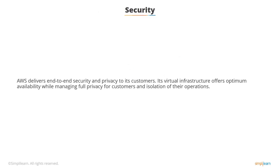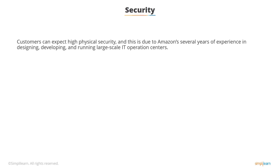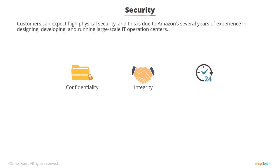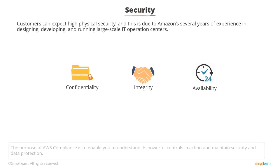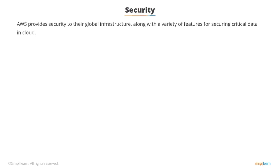AWS delivers end-to-end security and privacy to its customers. Its virtual infrastructure offers optimum availability while managing full privacy for customers and isolation of their operations. Customers can expect high physical security, due to Amazon's several years of experience in designing, developing, and running large-scale IT operation centers. AWS ensures confidentiality, integrity, and availability of user data. The purpose of AWS compliance is to enable you to understand its powerful controls in action and maintain security and data protection. AWS provides security to their global infrastructure along with a variety of features for securing critical data in the cloud.